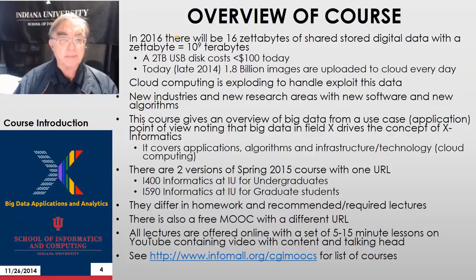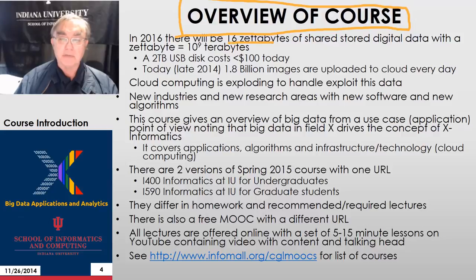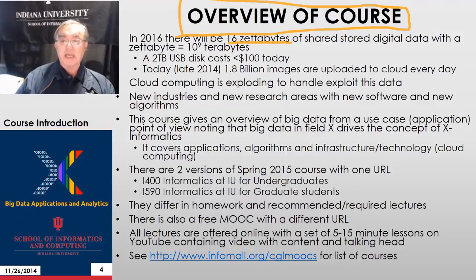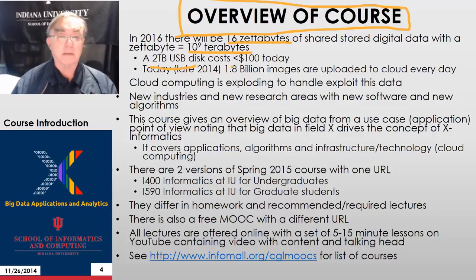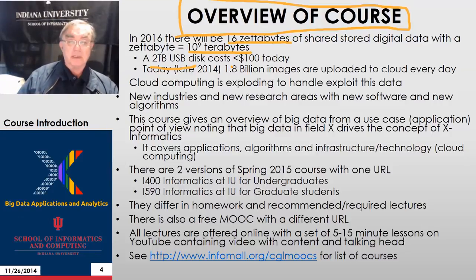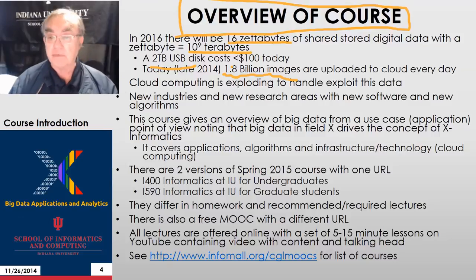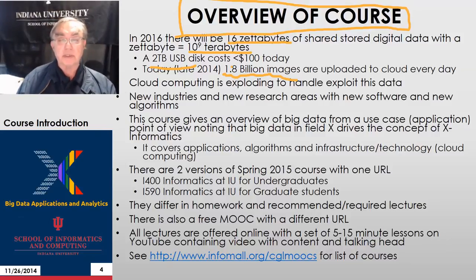In the final slide of this lesson, we give an overview of the course and a recap of the motivation. The motivation is this amazing number: 16 zettabytes in 2016 — the amount of shared stored digital data on the internet. Note a zettabyte is ten to the ninth terabytes. The two-terabyte USB disk costs less than $100; I looked it up on Amazon, about $86 or so — this is November 2014. The most striking number is the 1.8 million images uploaded to the cloud every day, most of those to various social media sites.